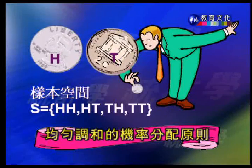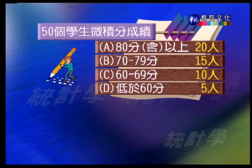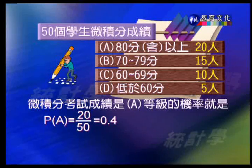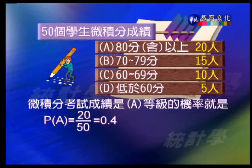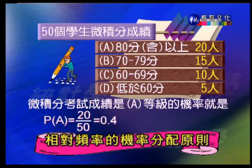另外一個例子：某班50個學生的微積分考試成績：A等級（80分以上）20人，B等級（70-79分）15人，C等級（60-69分）10人，D等級（60分以下）5人。如果問微積分成績是A等級的機率，就用20除以50，得到0.4，這就是相對頻率原則，因為20人相對於總人數佔了0.4。